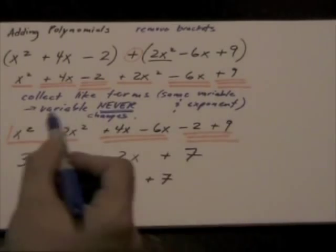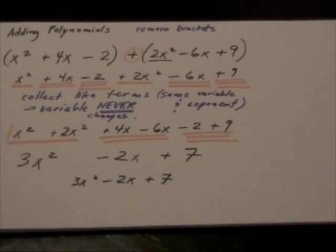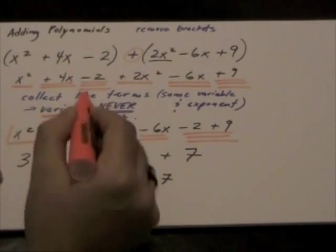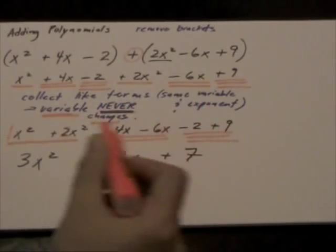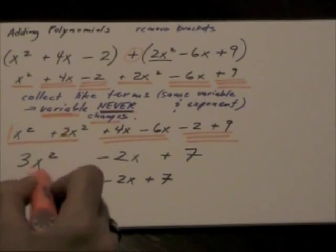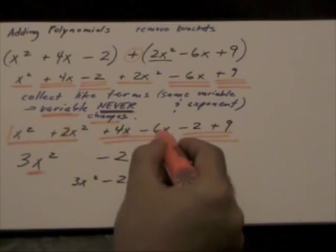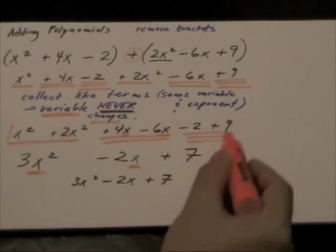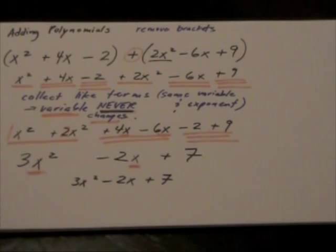And when we are adding like terms, remember that the variable never changes. So x squared is our variable here. X is our variable here. And here there is no variable, so it's just a constant.